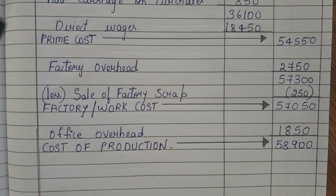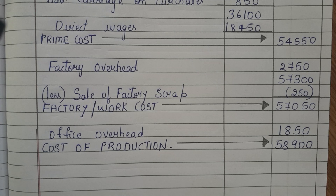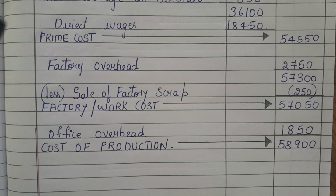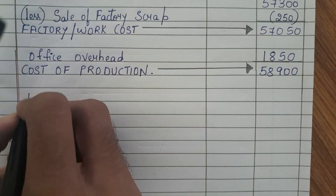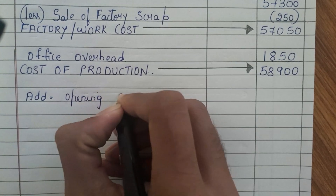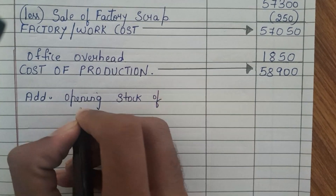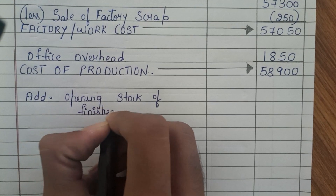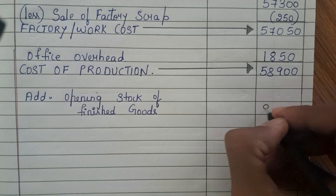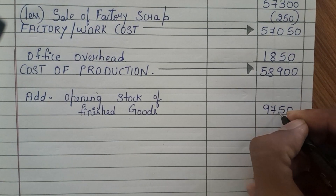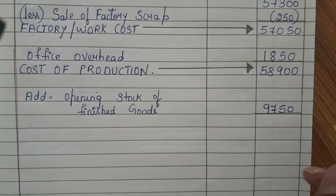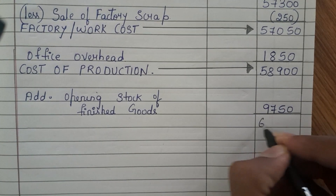Now we have been given opening stock of finished goods and closing stock of finished goods. Opening stock of finished goods needs to be added, and closing stock of finished goods needs to be subtracted. Opening stock of finished goods is 9,750. Adding 9,750 to 58,900, we get 68,650.